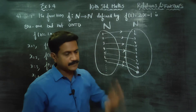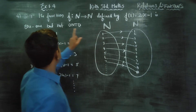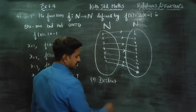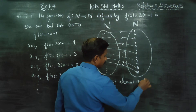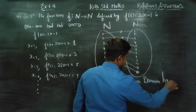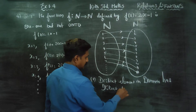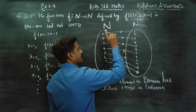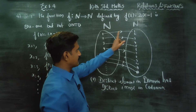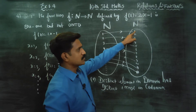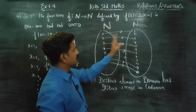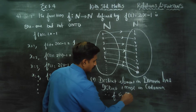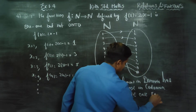The function produces distinct images, therefore it is 1-1. This is 1-1 — that is the first result. Distinct elements in the domain have distinct images in the codomain. The element maps to a distinct image. Distinct elements in the domain have distinct images in the codomain. Therefore f is a 1-1 function.